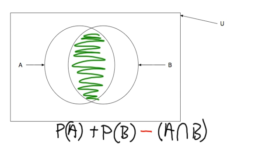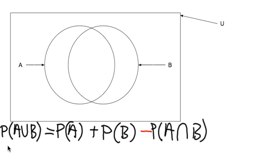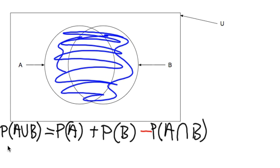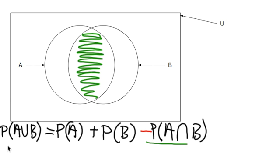The intersection is that green area — important information to know. And that's going to give us the union. What we want to know is the probability of the union of A and B, which I'm coloring in blue — both circles essentially. One important thing: anything that's in the intersection, we have to be careful not to double count that, and that's part of the reason we're subtracting out the intersection.